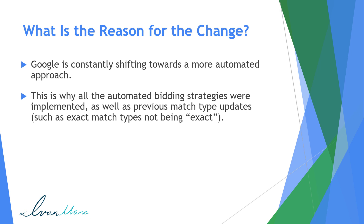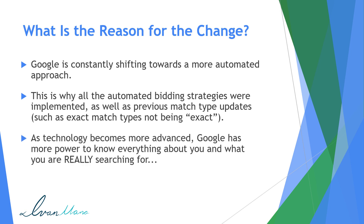So if you recall, they've added target CPA bidding, target ROAS, target return on ad spend. So overall, they're shifting towards a more automatic approach because Google is a multi-billion dollar company, right? They have a lot of information about people and a lot of money for technology. So they are trying to get you to trust them more, to trust their algorithms, to trust their systems to find winning customers. And so that is the reason for why they are changing all these different match types.